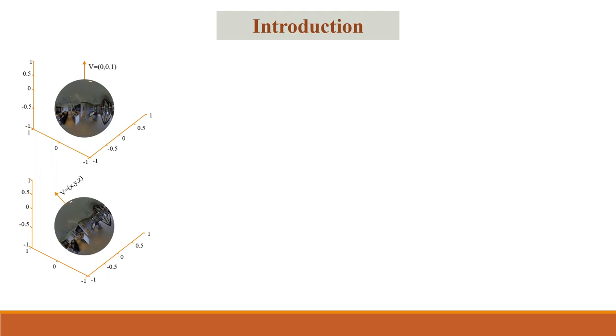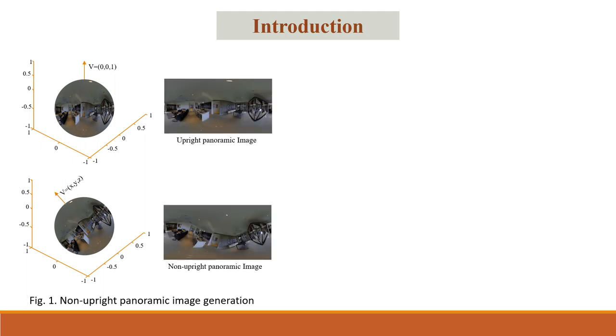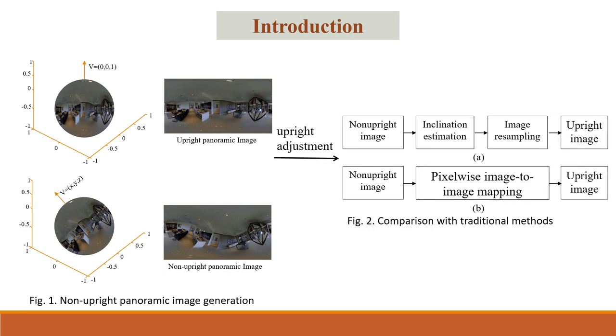Panoramic cameras can capture upright panoramic images, but tilting the camera produces non-upright images with rotational distortions on the spherical surface and loft projections on the plane. Our research addresses this challenge with the goal of achieving high-quality image generation in a more efficient manner.